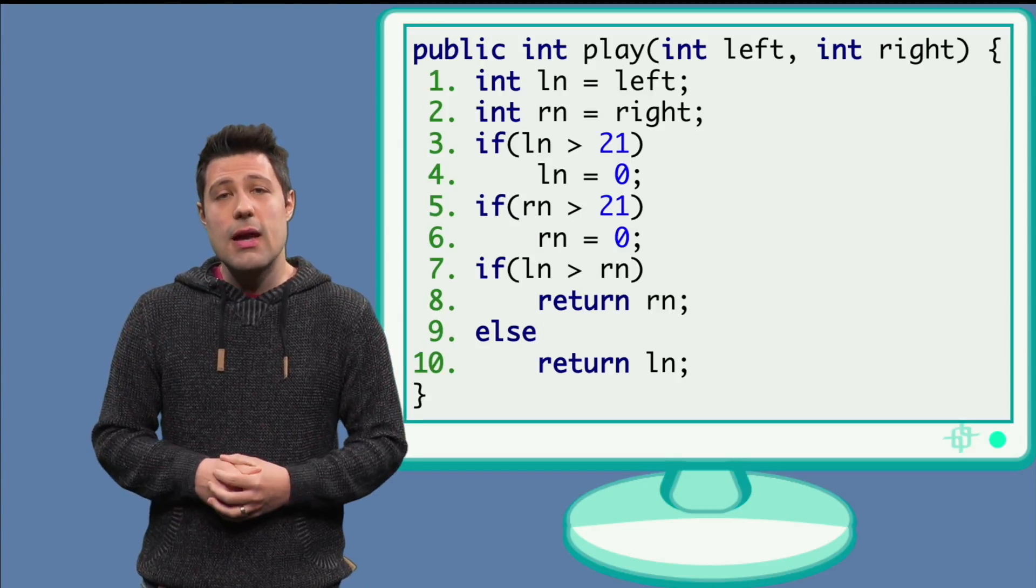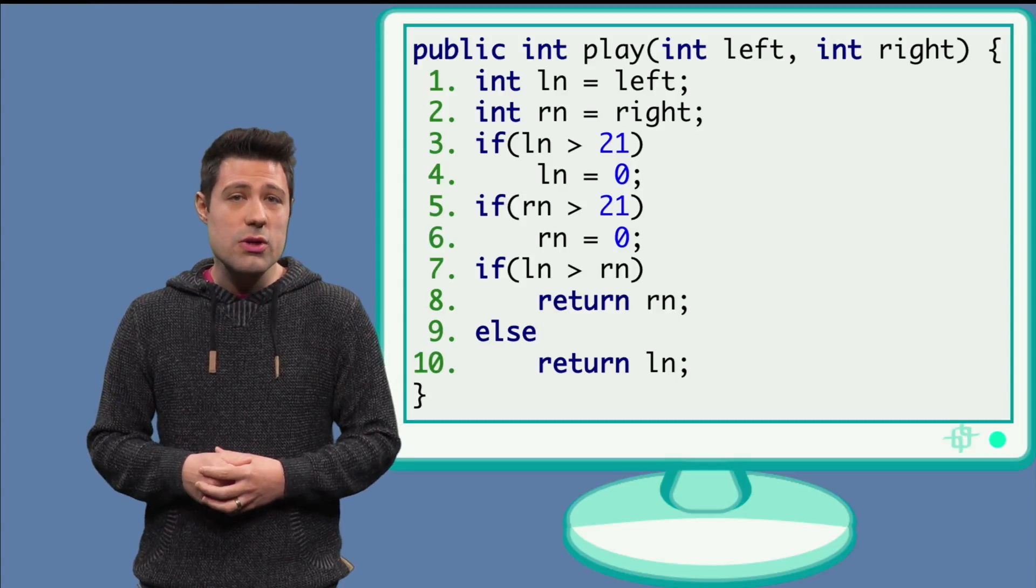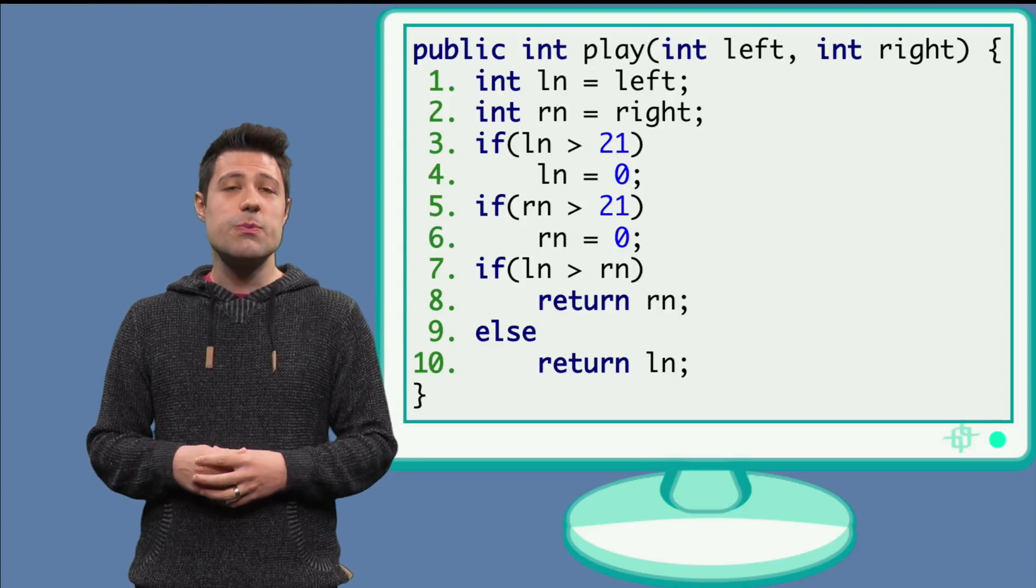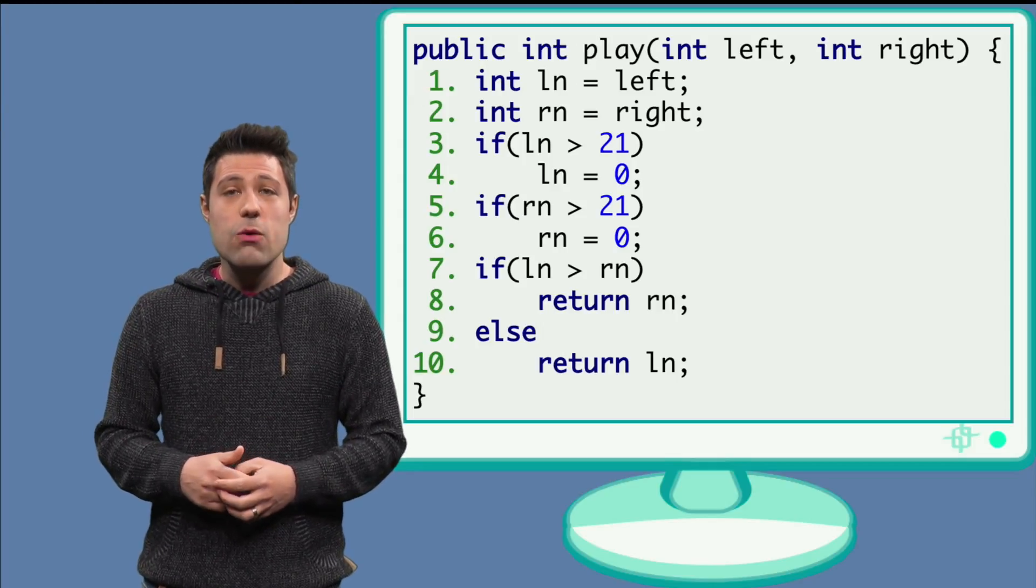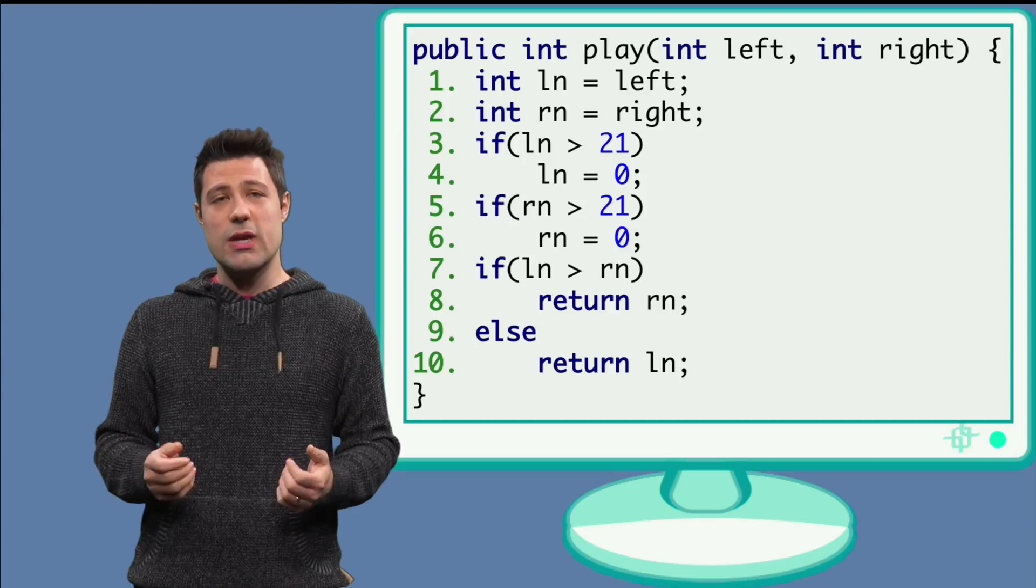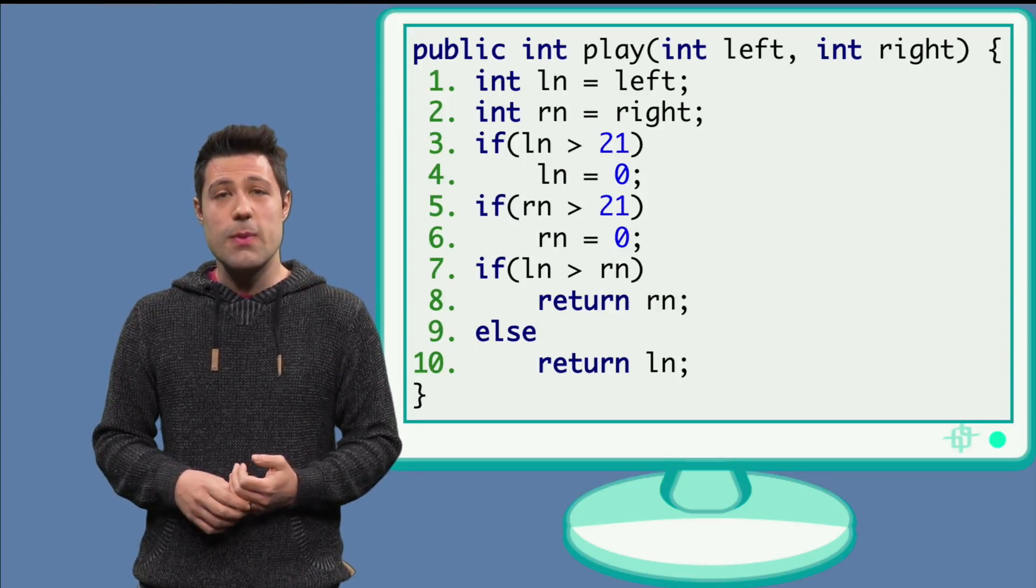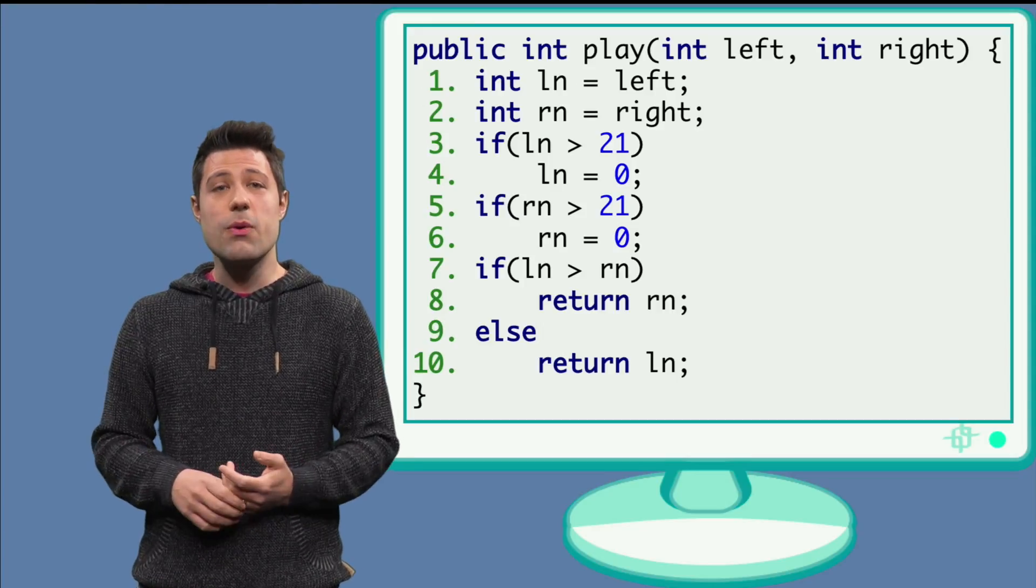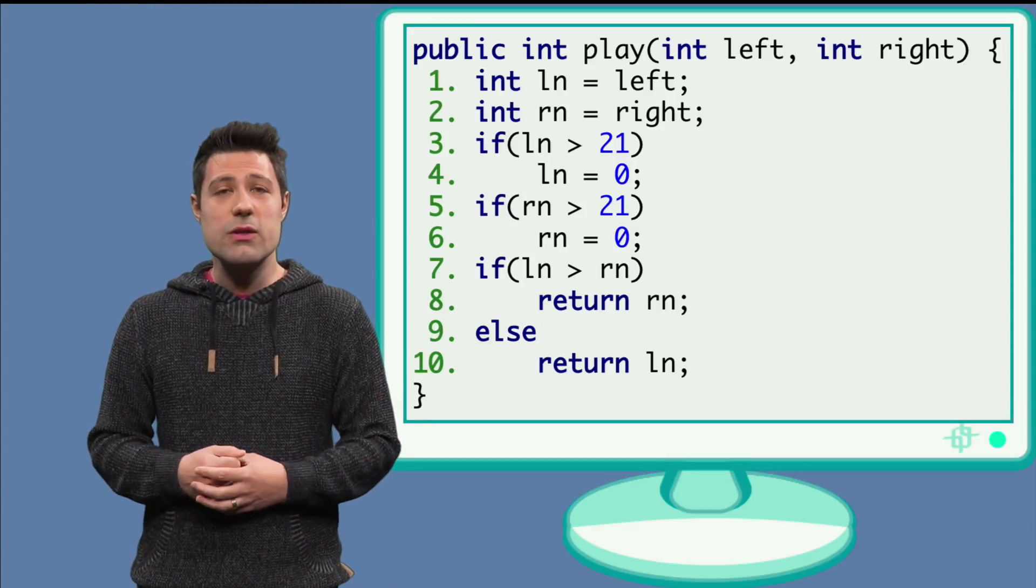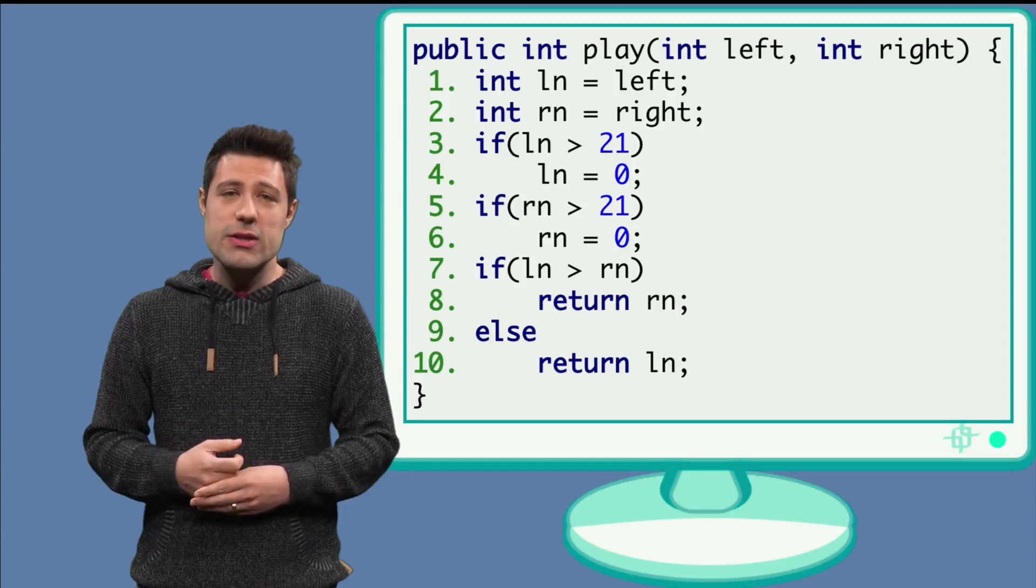Okay, then our goal is to test all the lines, or as we say, to achieve 100% line coverage. Let's get to work. Our first test will try to exercise as many lines as we can. For that, let's make all ifs true. This happens when both left and right are greater than 21. Let's write this test.